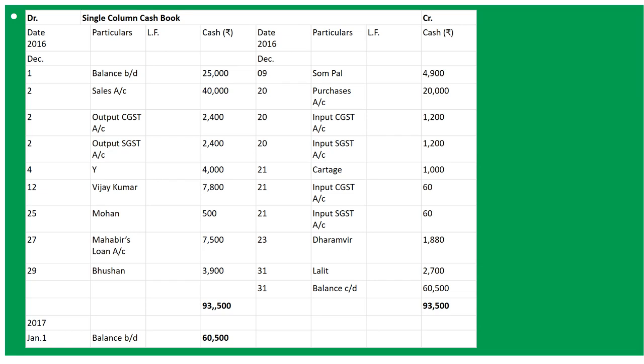On 29th, received from Mohan and discount allowed. So '29th To Mohan's Account' 3,900; discount allowed will go in working notes. On 31st, pay to Lalit 2,700 in full settlement of his account of 3,000. So 'By Lalit's Account' on 31st, 2,700.